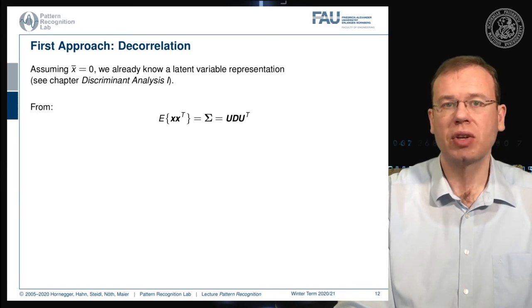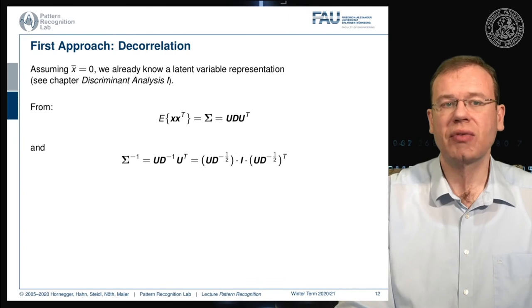We have also seen that if we compute the inverse, then we can essentially express this as two times this factor U times D to the power of minus 0.5 times the identity matrix times the factor again transposed. So we can compute a mapping to a normalized space using exactly this feature transform.